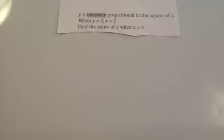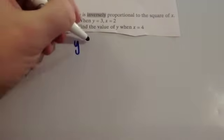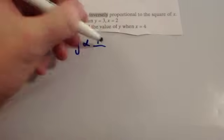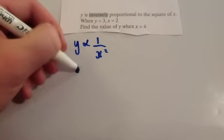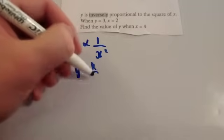So, it says Y is inversely proportional to the square of X. So, Y is proportional inversely, so 1 over the square of X, X squared. So, Y equals K over X squared.